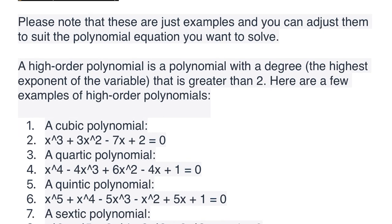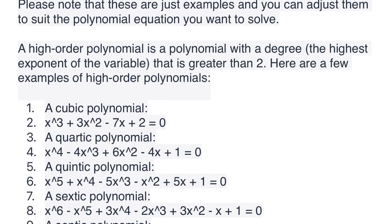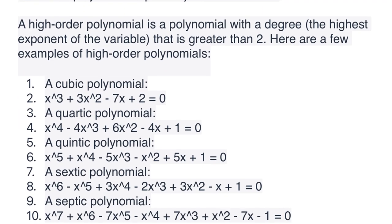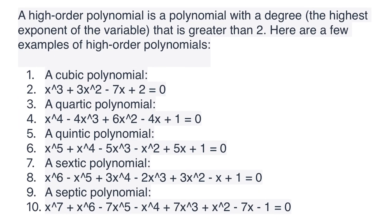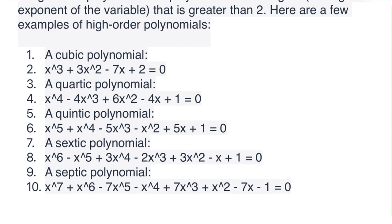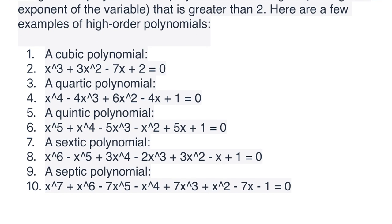A high order polynomial is a polynomial with a degree — the highest exponent of the variable — that is greater than 2. Here are a few examples of high order polynomials. A cubic polynomial: x^3 + 3x^2 - 7x + 2 = 0.